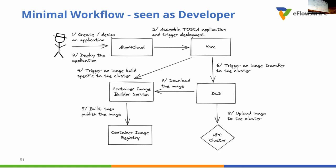The image creation service will build and publish the image on a container image registry. Once done, York will instruct the DLS to transfer the image to the target cluster. The DLS will download the image — generally it's a Singularity image in the minimal workflow — from the container image builder service and upload it to the cluster. This is typically what was shown in the previous presentation.